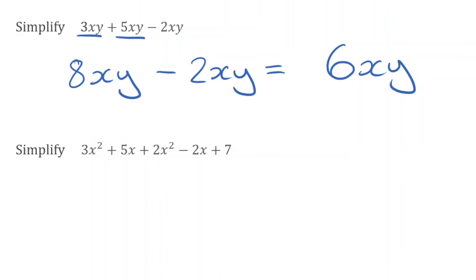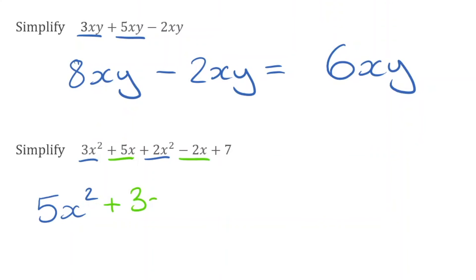On to our final question: simplify 3x squared plus 5x plus 2x squared minus 2x plus 7. We have terms of x squared, terms of x, and a constant term at the end. Combining like terms: 3x squared plus 2x squared gives us 5x squared. For terms of x, 5x take away 2x gives us 3x, so that'll be plus 3x. And on its own at the end, we have the constant term positive 7, so plus 7. The final answer is 5x squared plus 3x plus 7.